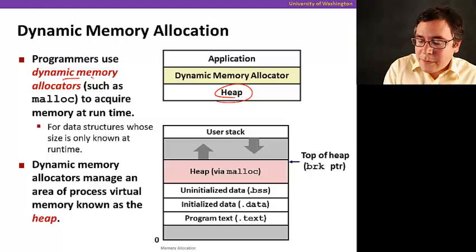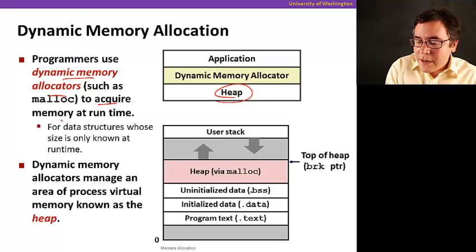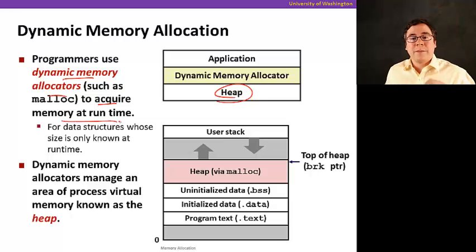So the programmers use dynamic memory allocators such that they can acquire memory at runtime. They can acquire pieces of its address space at runtime to store data. Again, this is for data structures that are only known at runtime. For anything that's known statically, you can allocate this in a different part of memory. We're talking about the heap is everything that's allocated explicitly.